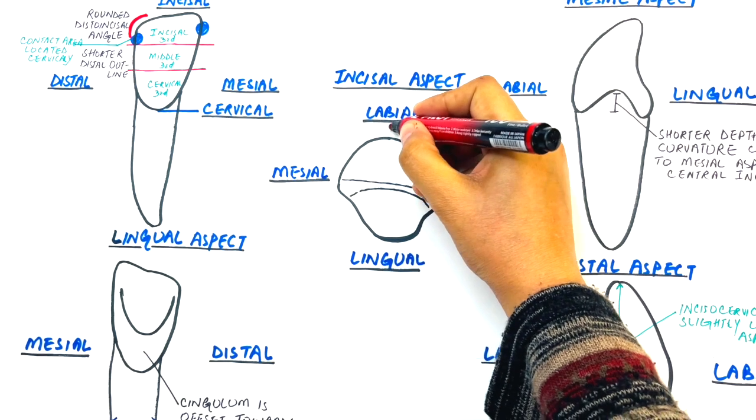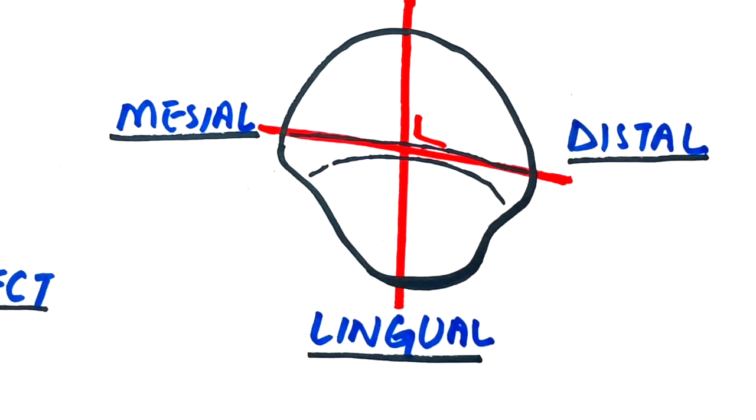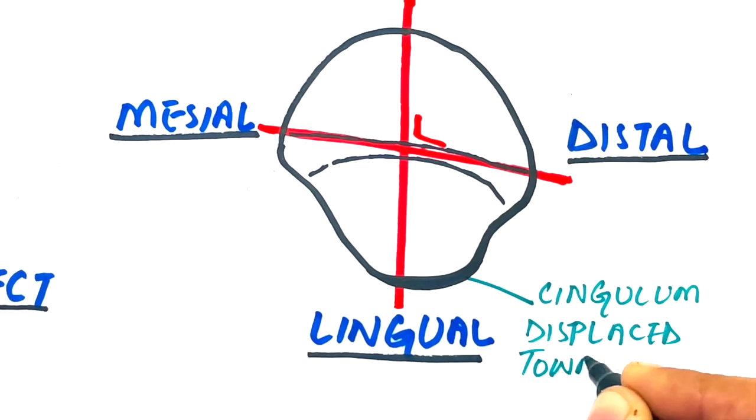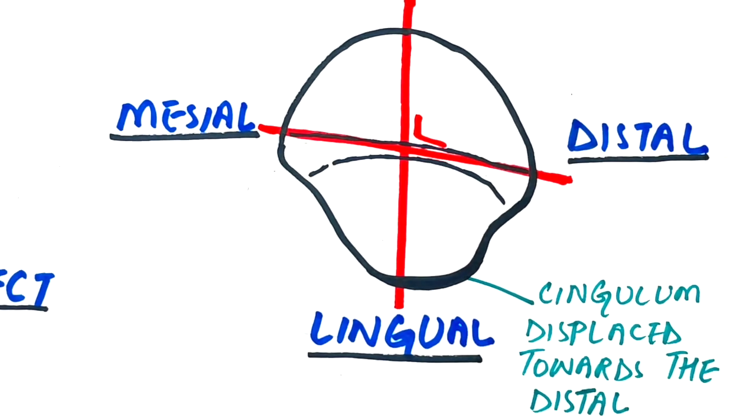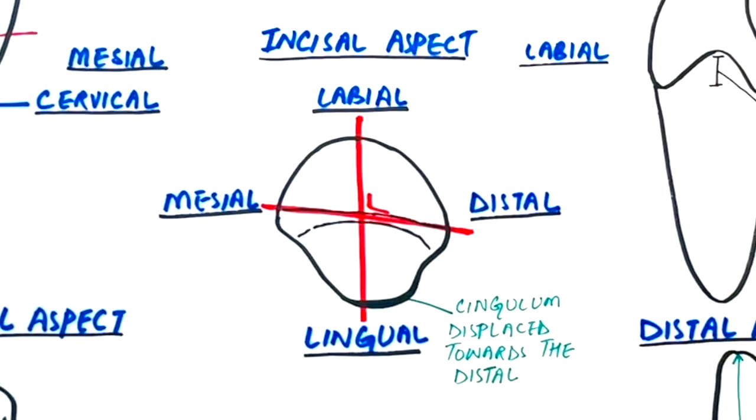The incisal edge is not at approximate right angles to a line bisecting the crown and root labio-lingually, as was found when observing the central incisor. Furthermore, the cingulum appears displaced towards the distal. These factors give the crown the appearance of being slightly twisted on its root.